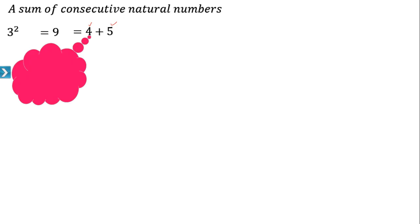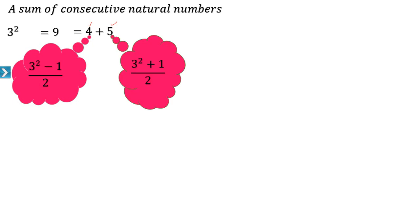Four is equal to (3² − 1) / 2. That is, 3² means 9, so 9 minus 1 is 8, and 8 divided by 2 is 4. And 5 is (3² + 1) / 2. So 3² equals 4 plus 5. To express 3² as the sum of two consecutive natural numbers, the formula to remember is (3² − 1) / 2 and the next number (3² + 1) / 2.